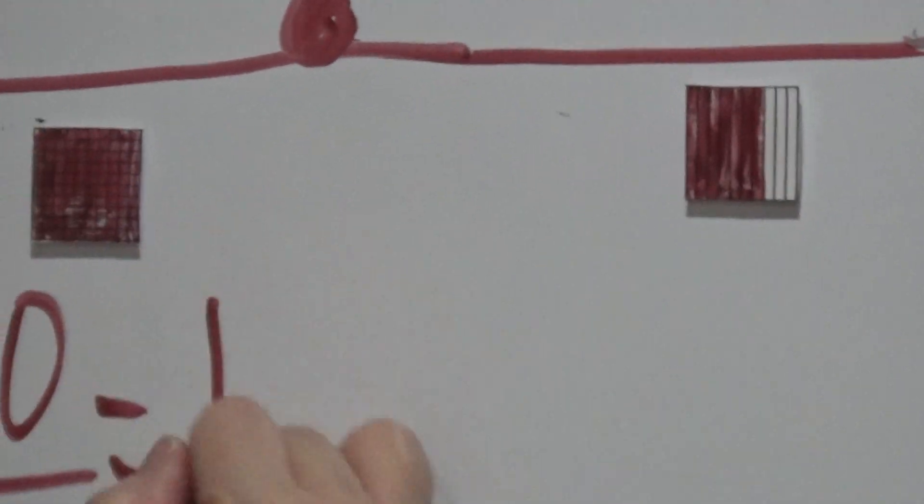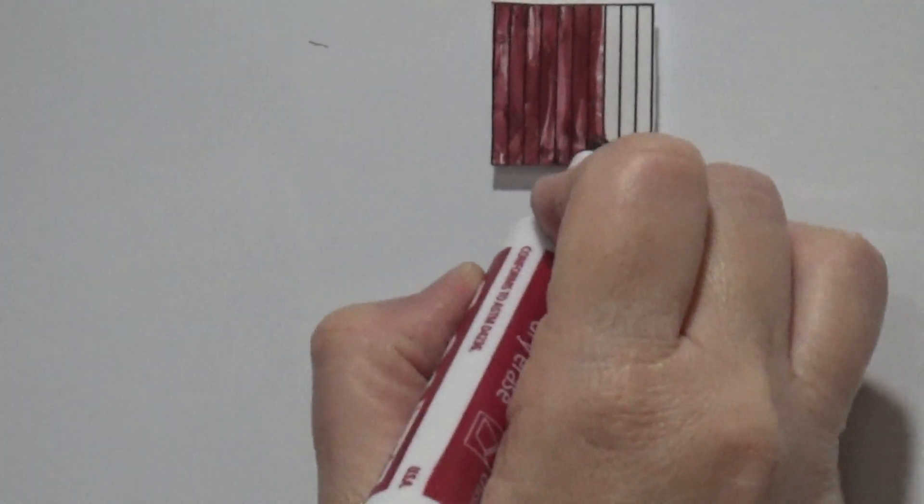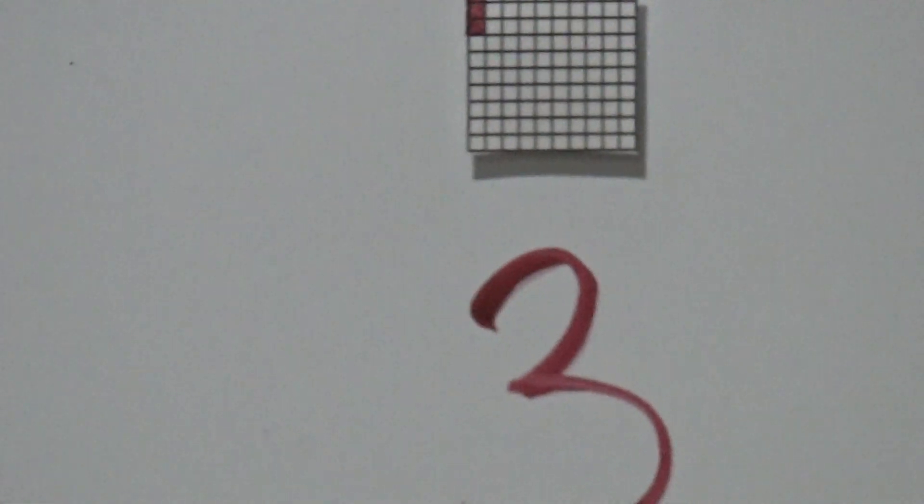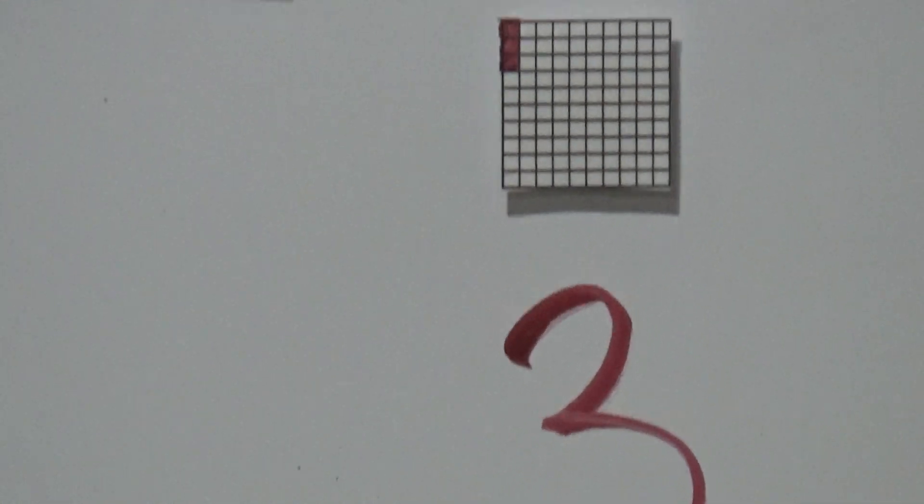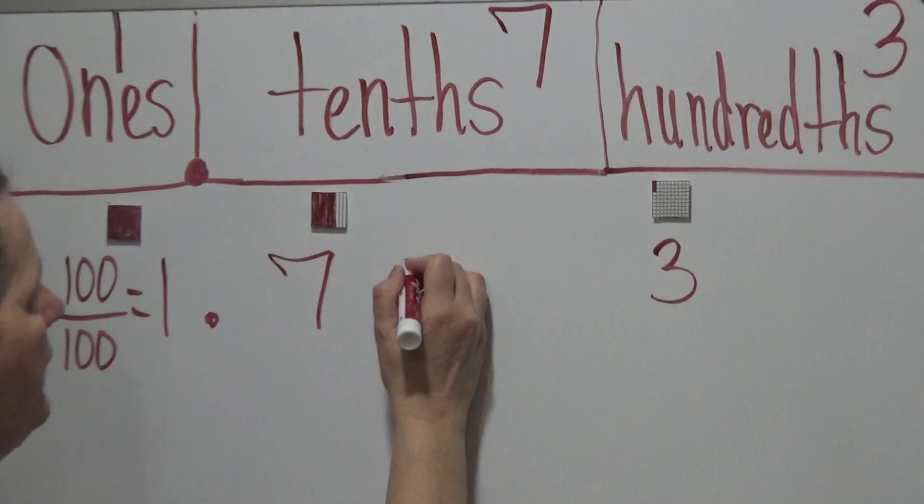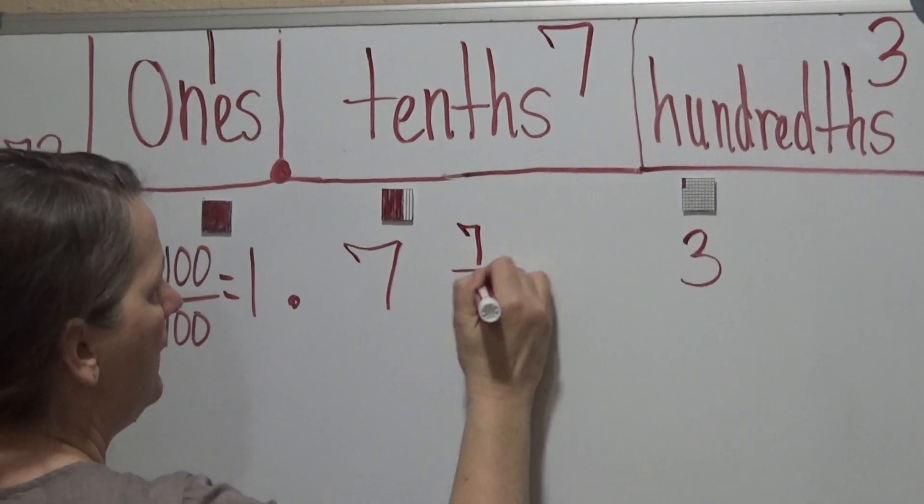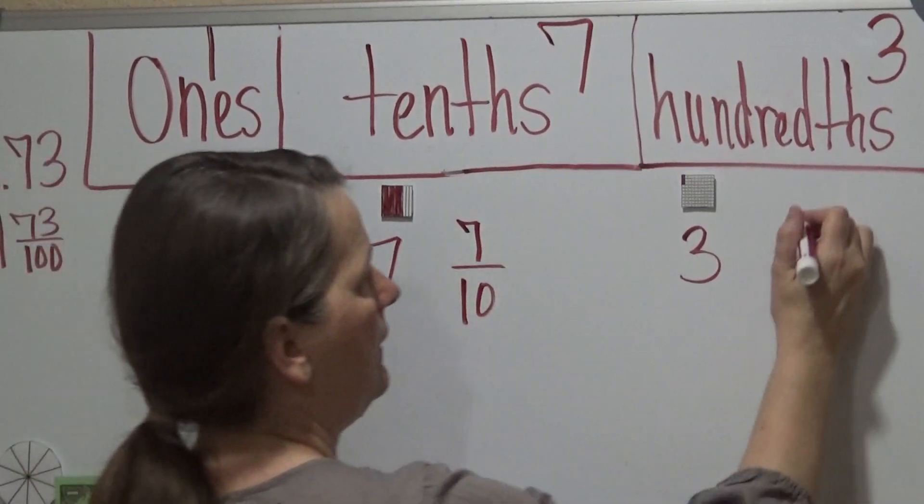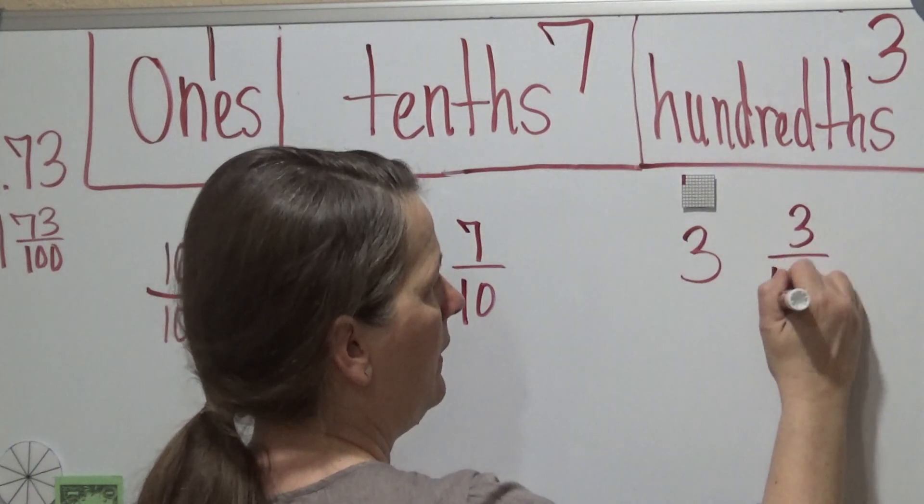And then we count 1, 2, 3, 4, 5, 6, 7 shaded in, and then the units 1, 2, 3 shaded in. So this would be 7 out of 10, and this would be 3 out of 100.